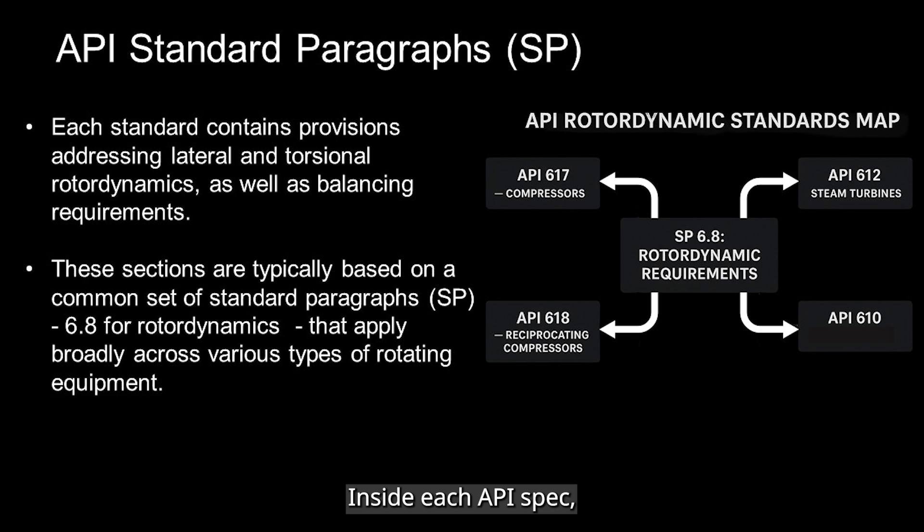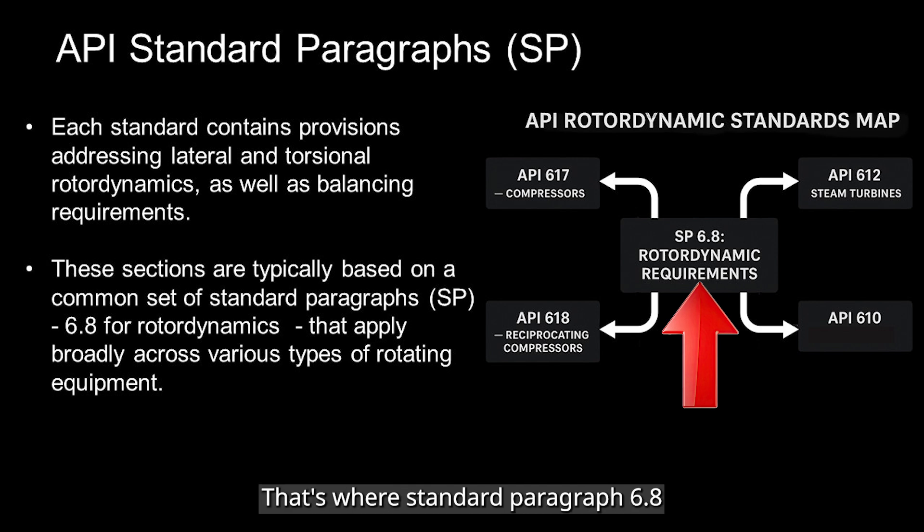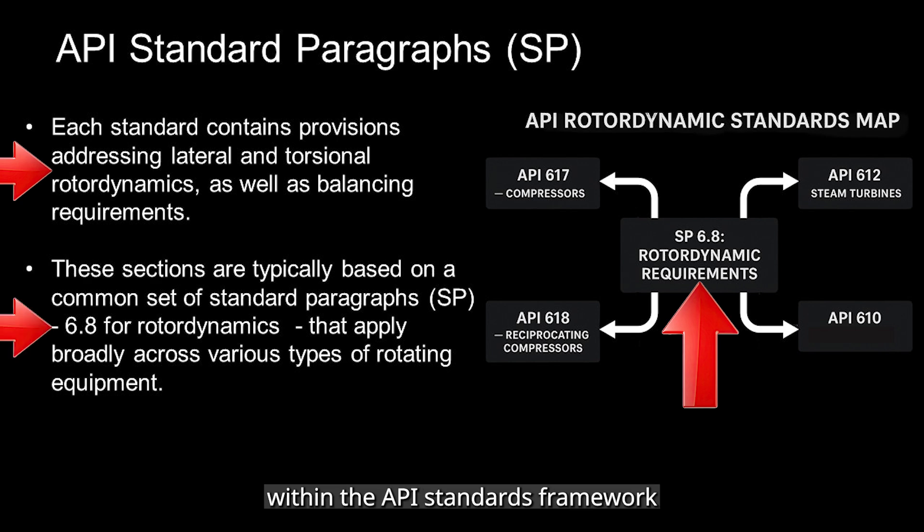Inside each API spec, there's a special section dedicated to dynamics. That's where standard paragraph 6.8 comes in. API standard paragraphs, section 6.8 is the core of the rotor dynamics and rotor balancing acceptance guide within the API standards framework for rotating equipment.